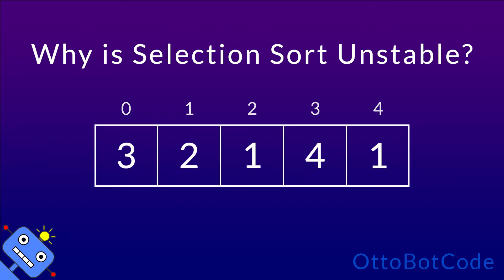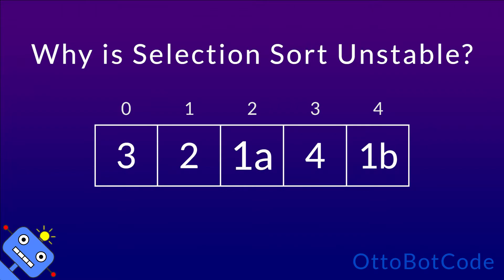Here we have an array containing identical values. The element 1 appears twice. Let's label them 1a and 1b, purely so we can tell them apart — they are still just 1s. Recall that a sorting algorithm is stable if it preserves the relative order between identical elements, so 1a must come before 1b after sorting.